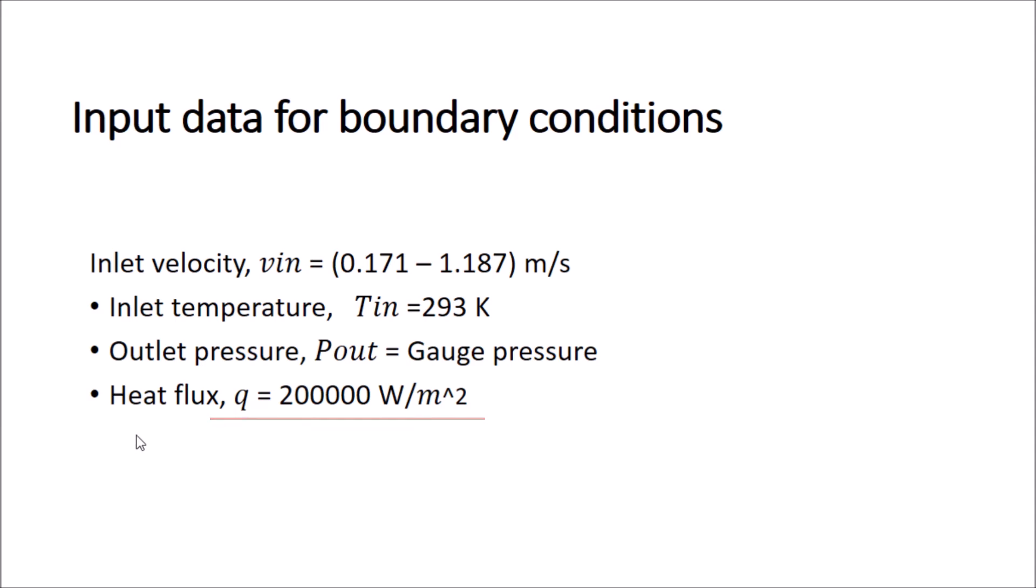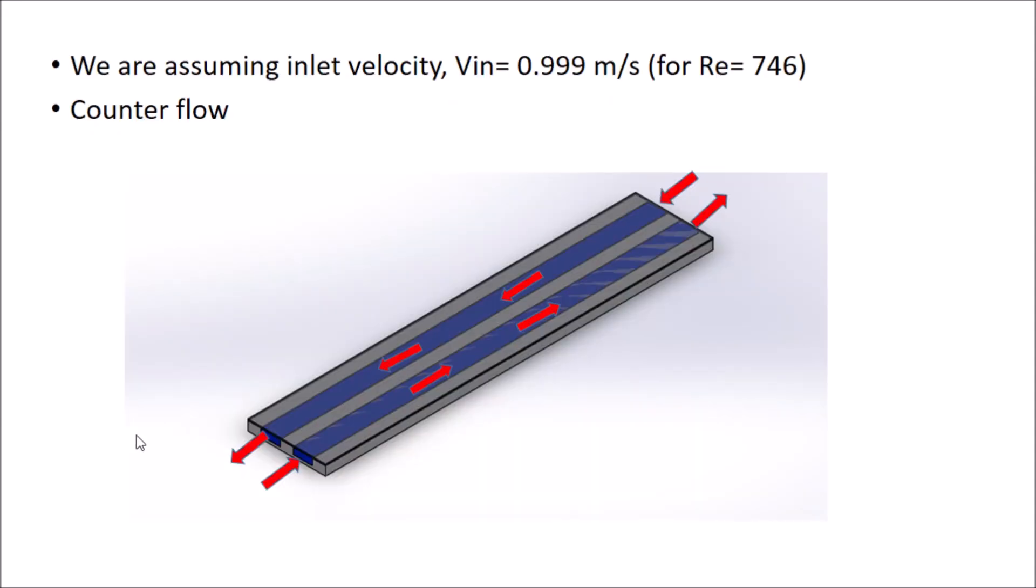We are assuming the inlet velocity v_in equals 0.999 meters per second. This value is determined by assuming the Reynolds number as 746. Reynolds number equals rho v d divided by mu. Put all the values here and you will get v_in. The last thing I want to mention is we are assuming the flow through the two mini channels are in counter direction.